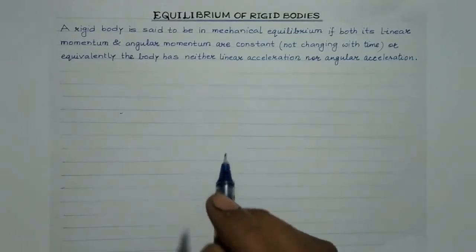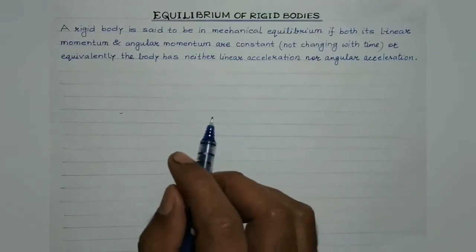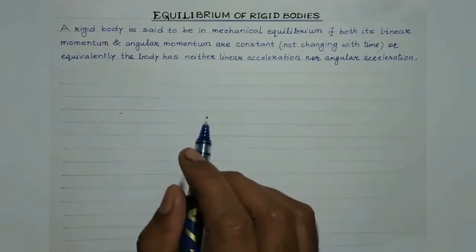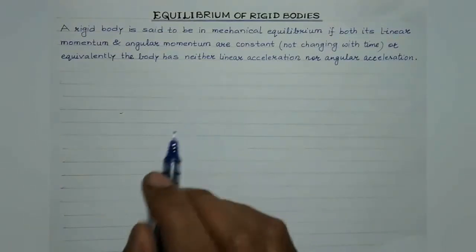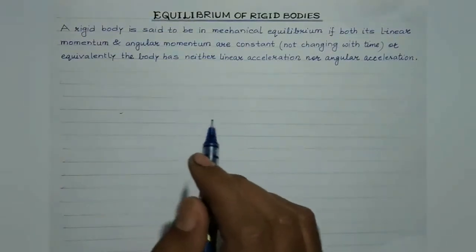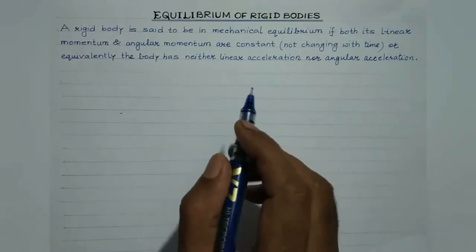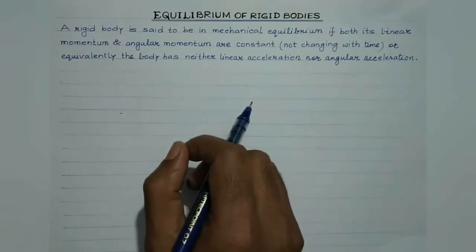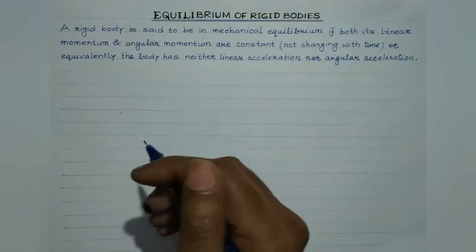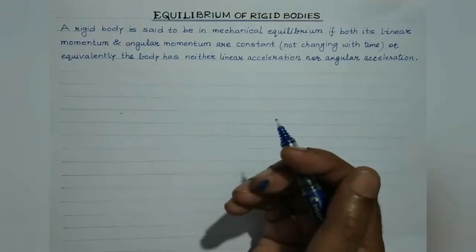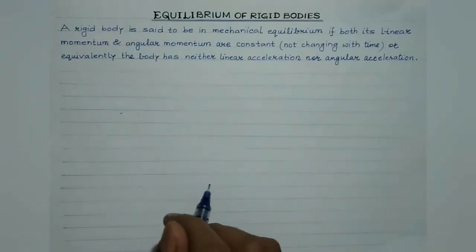For the equilibrium of a rigid body, it is not necessary that the rigid body is at rest. However, it should be noted that if the rigid body is at rest, then the equilibrium is known as static equilibrium.